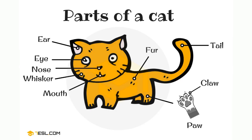You may need to do some research about the parts of the animal that you choose. If you choose cat as your robot pet, this is the parts of a cat.